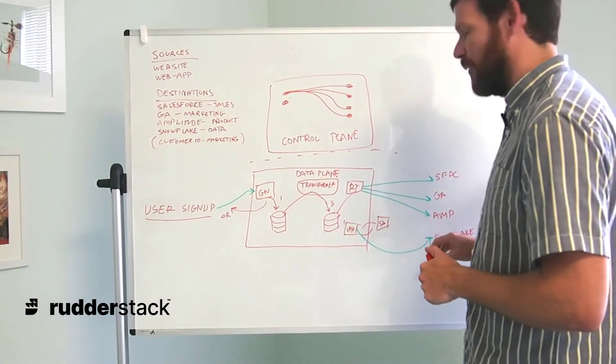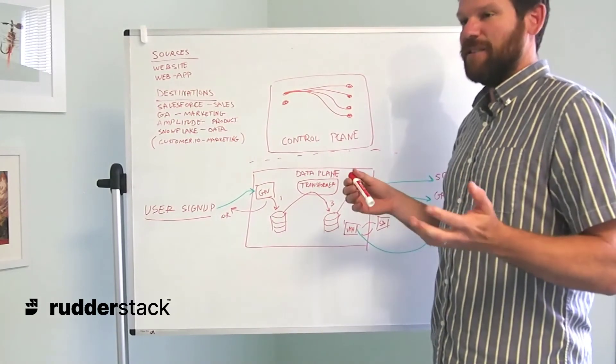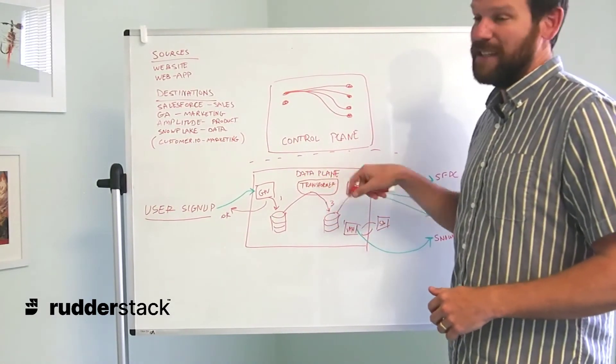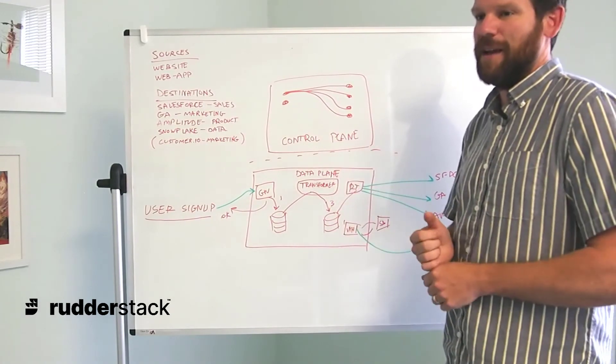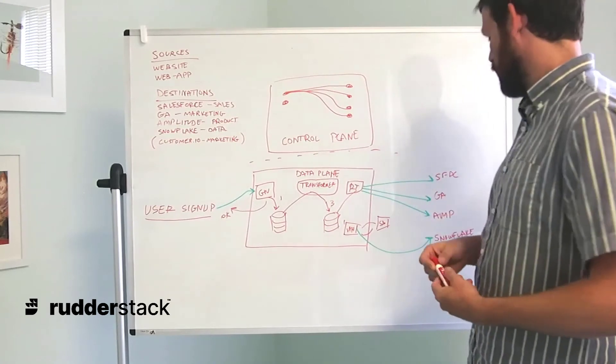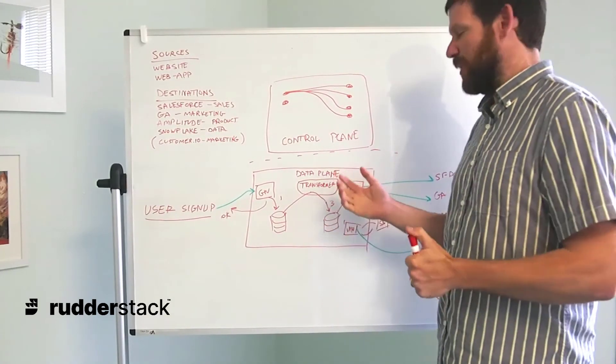We can also mask and remove specific traits from these events in the transformer. If we want to mask something like PII for Google Analytics or whitelist traits for Salesforce, we can do that from within a transformation.